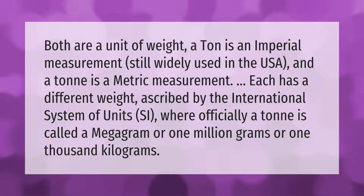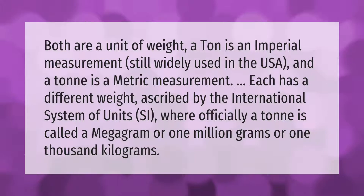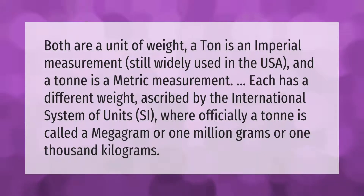Both ton and tonne are units of weight. A ton is an imperial measurement still widely used in the USA, and a tonne is a metric measurement. Each has a different weight ascribed by the International System of Units (SI), where officially a tonne is called a megagram, or 1 million grams, or 1,000 kilograms.